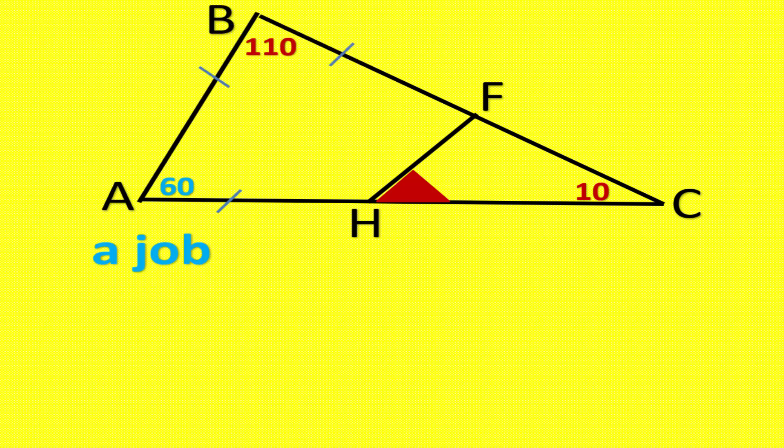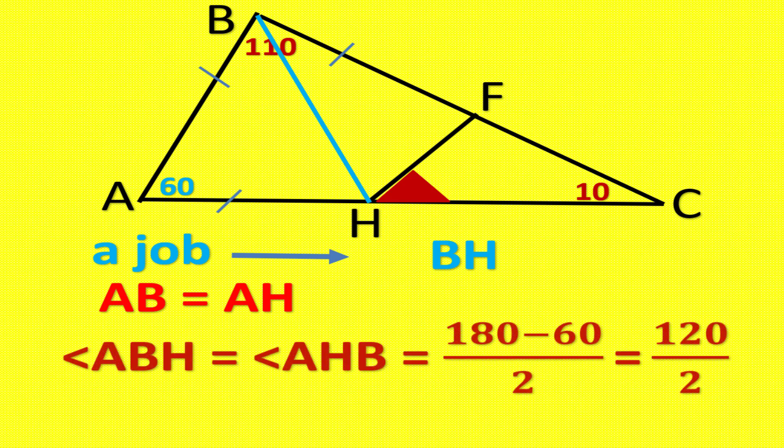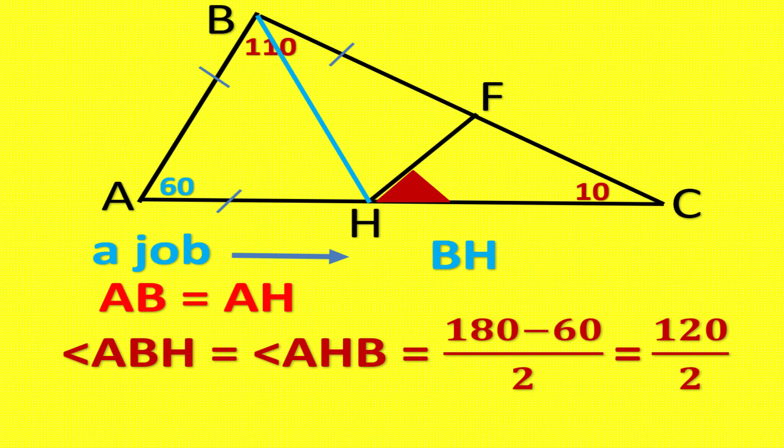Drawing BH. AB equals AH. Angle ABH equals angle AHB equals 180 minus 60 divided by 2 equals 120 divided by 2. Angle ABH equals angle AHB equals 60 degrees.